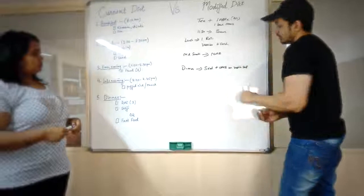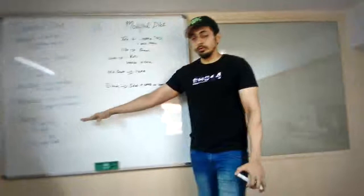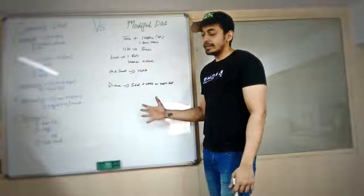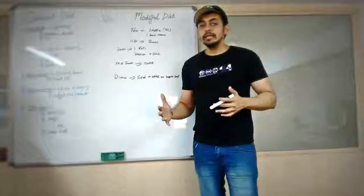And for dinner, salad. We added salad and oats or vegetable soup. For dinner we cut down the rotis from three, we eliminated the roti. We asked her to have salad, some oats if she's really hungry, or vegetable soup. So now that's her diet in a nutshell.